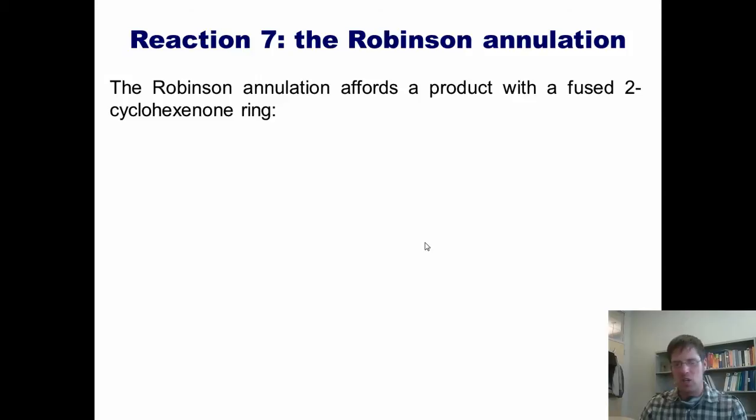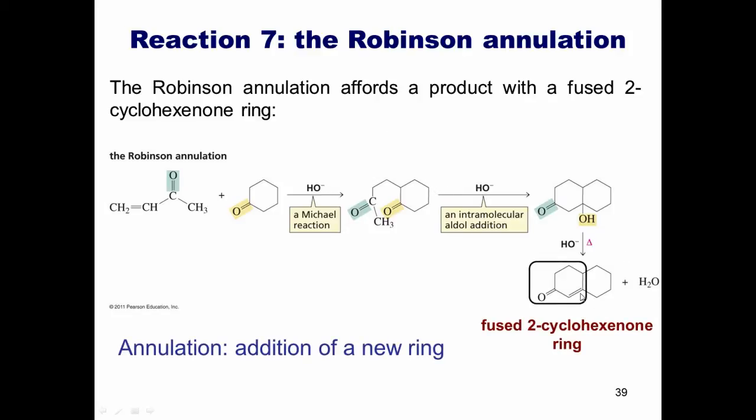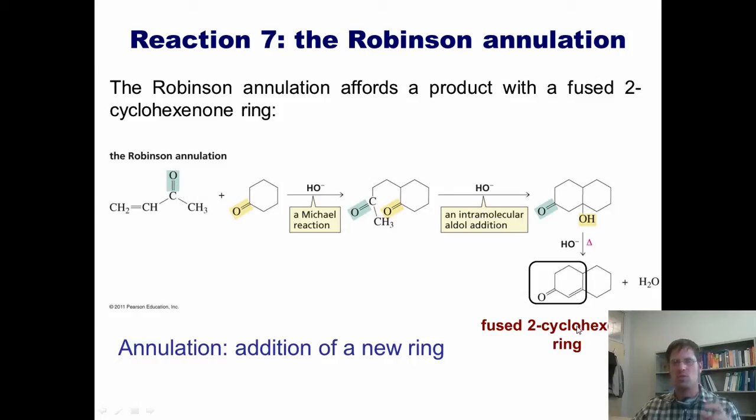The Robinson annulation is a sweet application of this kind of chemistry. Let's look at our starting materials and compare them with the product. We start with a ketone and react it with another ketone that's alpha-beta unsaturated, and we ultimately end up with a fused cyclohexenone. This is an alkene, a ketone fused to this ring like this. You might look at this and say, say what? Oh yeah, we start with a ketone, react it with an alpha-beta unsaturated ketone, and end up with a fused cyclohexenone ring. So how do we do that?